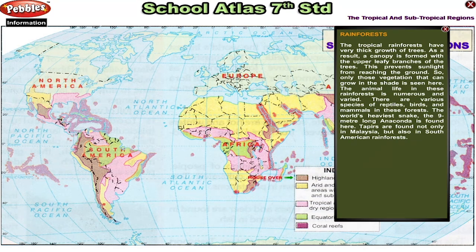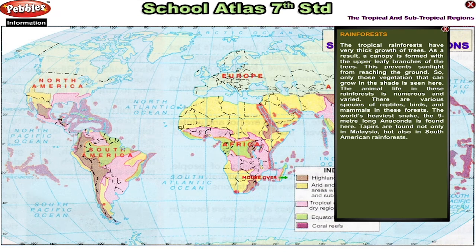The animal life in these rainforests is numerous and varied. There are various species of reptiles, birds and mammals in these forests. The world's heaviest snake, the 9 meter long anaconda, is found here. Tapirs are found not only in Malaysia but also in South American rainforests.